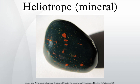The primary source of the stone is India. It is also found in Brazil, China, Australia, and the United States. There is also an outcrop of bloodstone on the Isle of Rum, in Scotland.